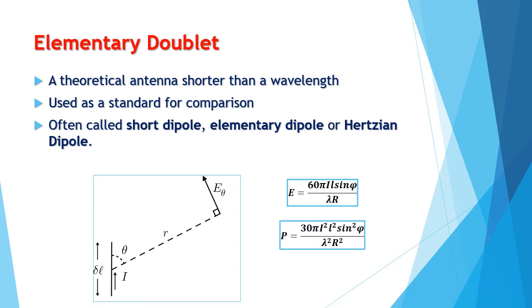And power is given by this equation: P is equal to 30 pi I squared L squared sine squared theta, divided by pi squared I squared.